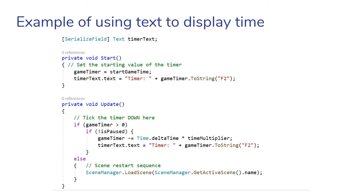Here's the timer script example. I have a reference to the text named timerText, and I'm setting it to the game timer as a string. The format specifier "F2" means it's a float showing only two decimal places, so the string isn't a cluttered long decimal. In action, as the time goes down, the timer ticks down and is properly displayed on screen.